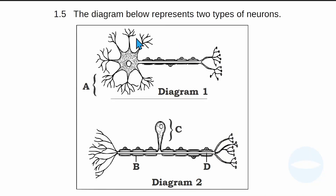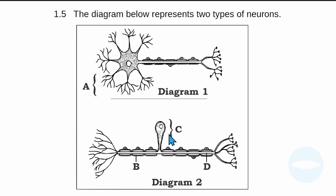First of all, I would like to analyze this diagram. Before I answer the questions, it's better to analyze the diagram and give names and labels that are needed. We have two types of neurons: motor neurons and sensory neurons. The difference between motor neurons and sensory neurons is the cell body. With sensory neurons, the cell body is on the side, but with motor neurons, you find it is either at the end or at the beginning. This is the difference between motor neuron and sensory neuron.